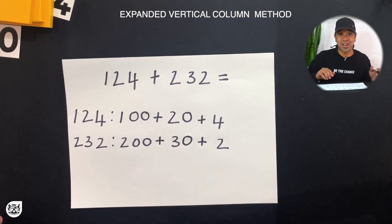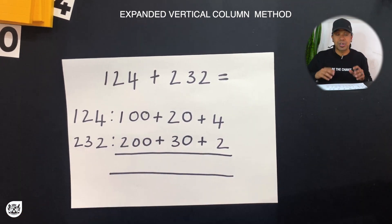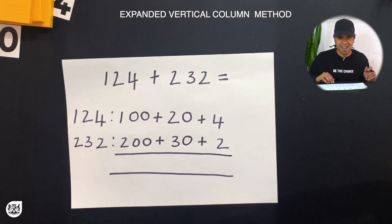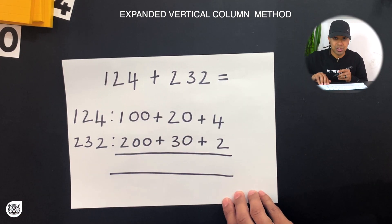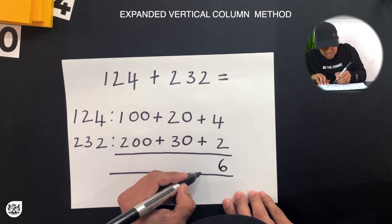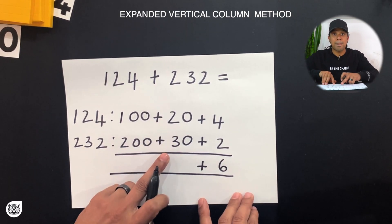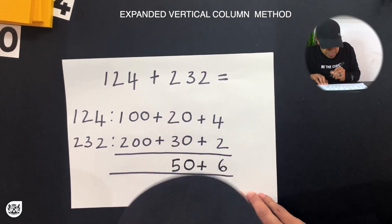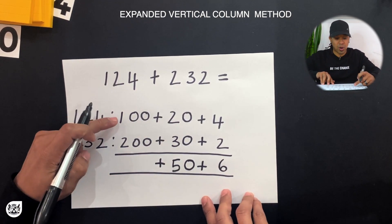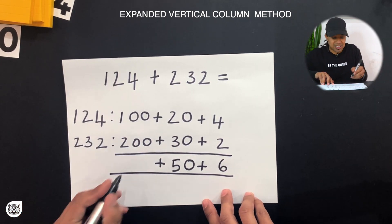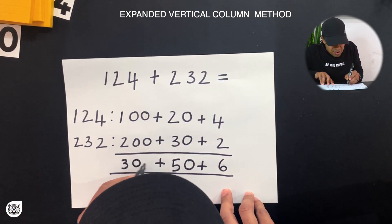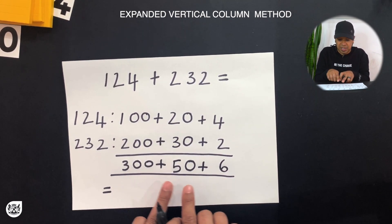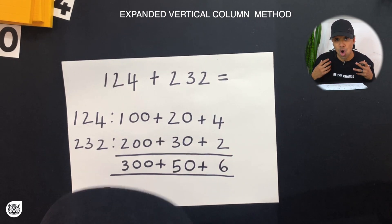Now all we're going to do is add these numbers. We're going to start by adding the ones, then the tens, then the hundreds. So 4 plus 2 gives us 6. Then 20 plus 30 gives us 50. Then 100 plus 200 gives us 300.